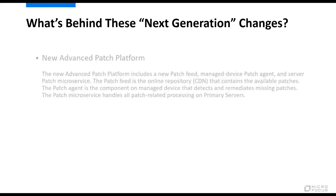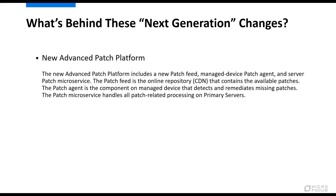These new core level capabilities are driven by two major changes in the product. First, we've introduced a new advanced patch platform. The new platform includes a new patch feed, a new patch agent for managed devices, and a new server-side patch microservice. The patch feed is the online repository, or CDN, that contains the available patches. The patch agent is the component on managed devices that detects and remediates missing patches. And the patch microservice handles all patch-related processing on primary servers. So you can see that the new platform covers everything from start, where you get the patches, to end, where you apply the patches.